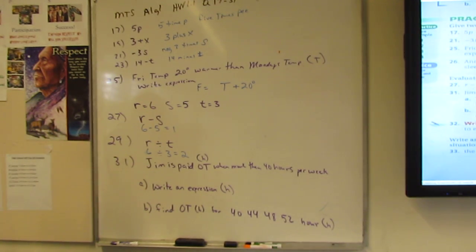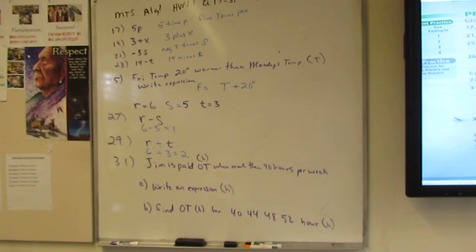Okay. And then, Jim is paid OT. When more than 40 hours per week, right? This is kind of hard. They're like, earlier I was asking them, they're like, I don't get it. I don't know how to do the expression, right? And I'm like, well, how would you do an expression in H, in hours? And they're like, I don't know, divide. I don't know, add, multiply. All this stuff. Just guessing. Yeah? Does anyone have an idea in here? Besides just guessing?